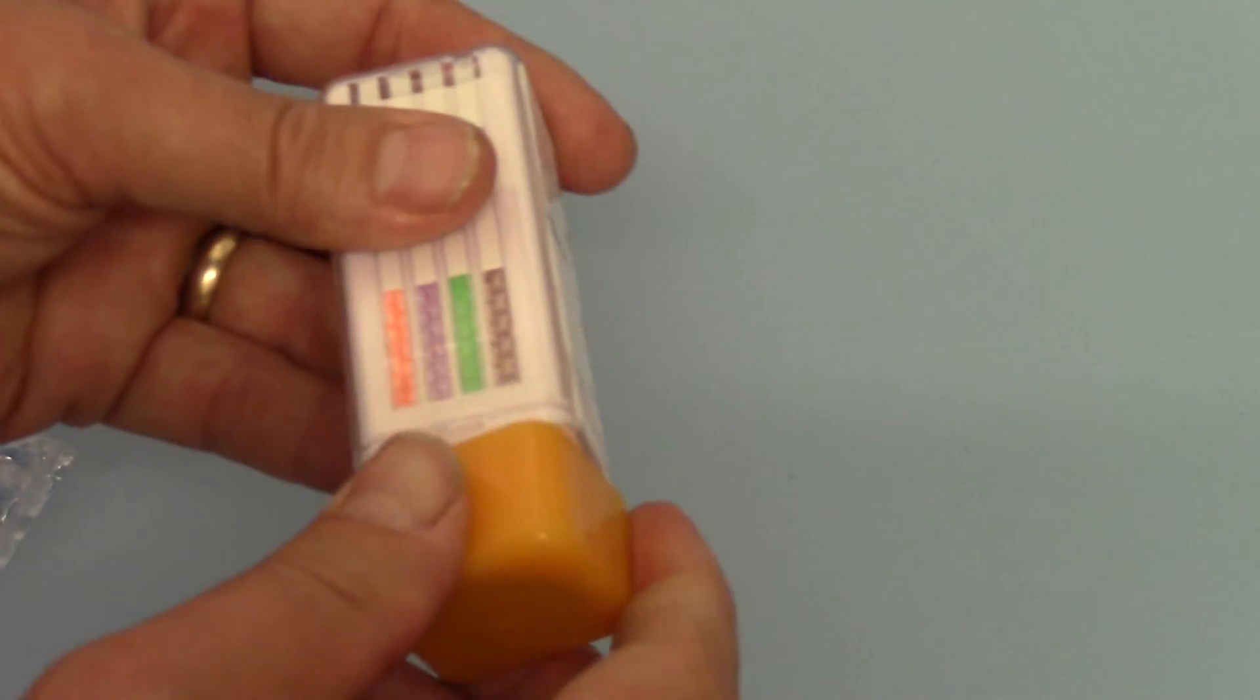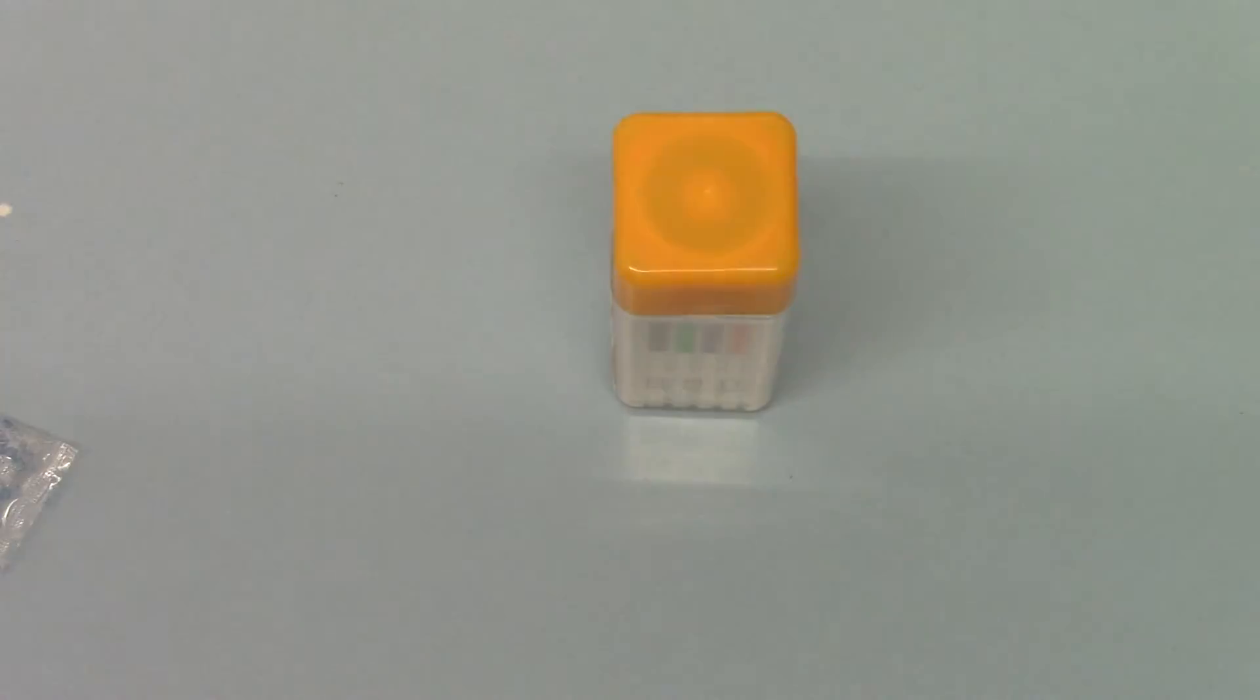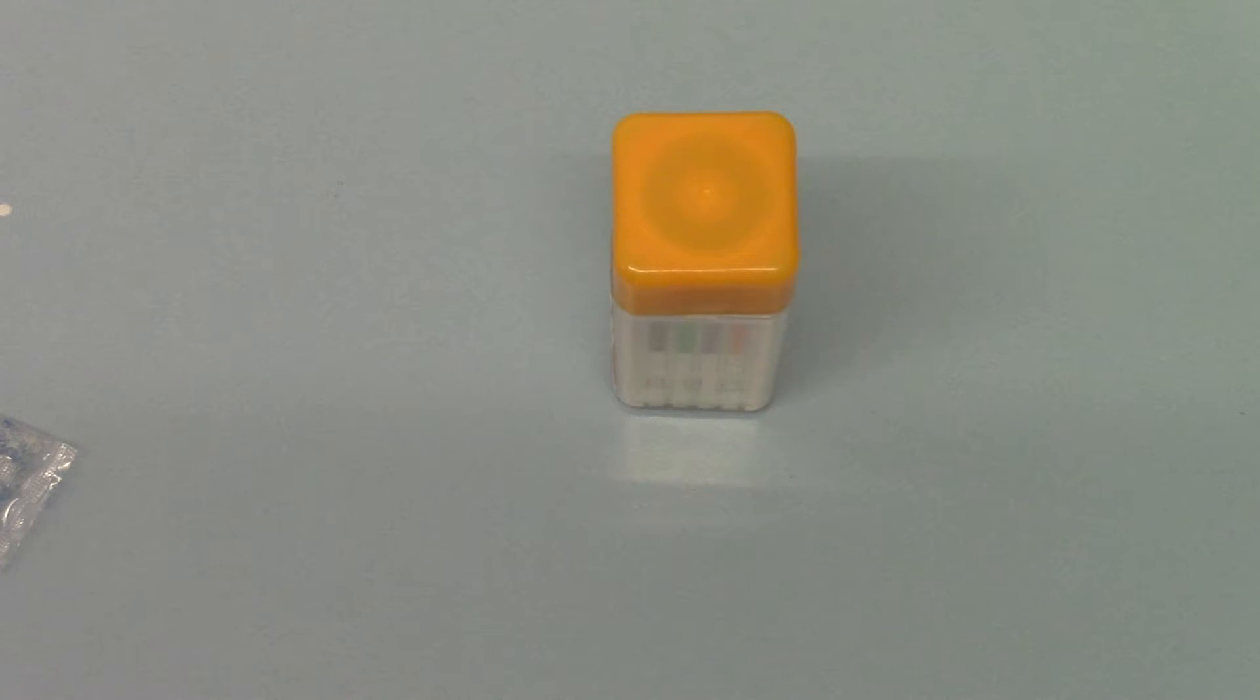With sufficient saliva added to the sponge, what we do now is simply screw the lid down until it's closed and place it vertically on a surface for the saliva, which is now being discharged from the sponge, to flow onto those six membranes.